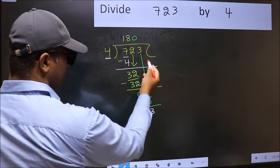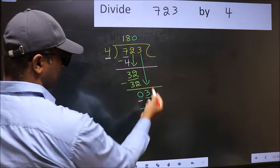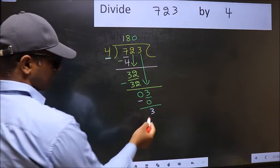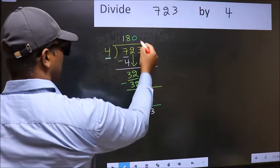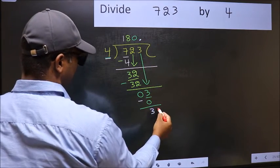Over here, we did not bring any number down. And 3 is smaller than 4. So now you can put a dot and take 0.